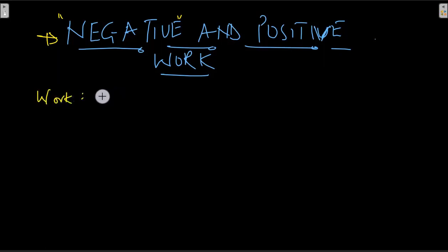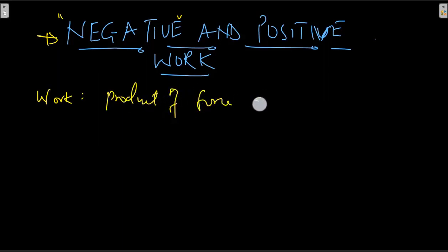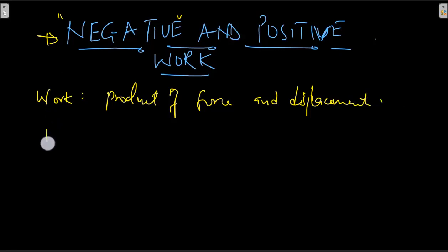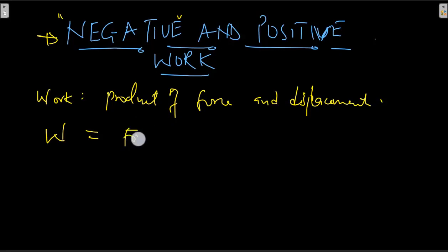We know by mathematical definition that work is the product of force and displacement. So this is the definition of work. I can write that now in mathematical formula — let me use the letter W to represent work. This is going to be the product of force and displacement.